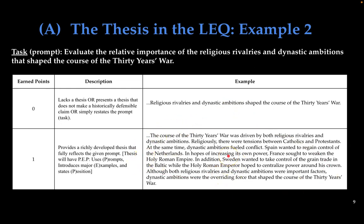Now let's look at a detailed acceptable thesis: 'The course of the Thirty Years War was driven by both religious rivalries and dynastic ambitions. Religiously, there were tensions between Catholics and Protestants. At the same time, dynastic ambitions fueled conflict — Spain wanted to regain control in the Netherlands, France sought to weaken the Holy Roman Empire, Sweden wanted control of the grain trade in the Baltic, while the Holy Roman Emperor hoped to centralize power. Although both were important factors, dynastic ambitions were the overriding force.' Is it wordy? Yes. But it's definitely acceptable. I really like the gray area thesis template as a starting point, especially at the beginning of the year.